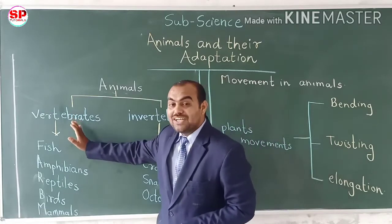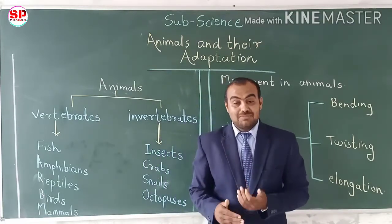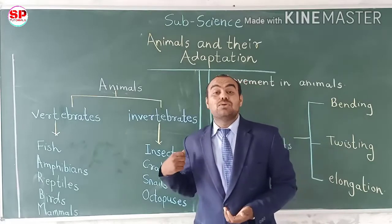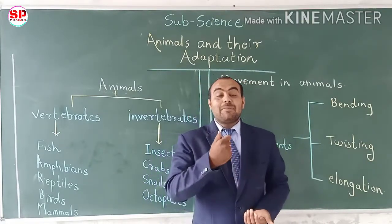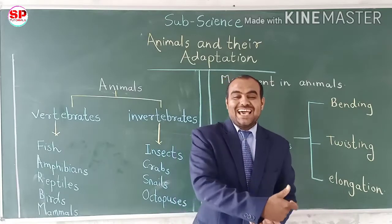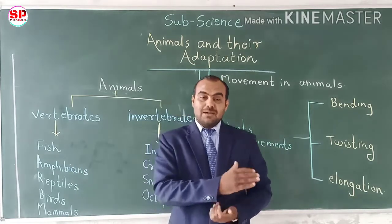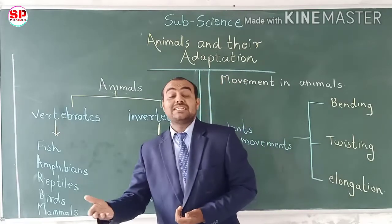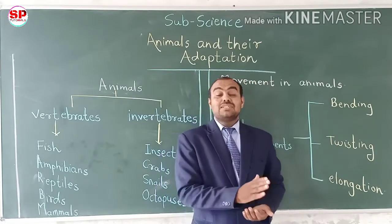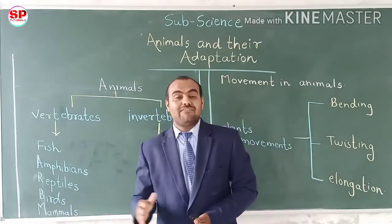The first type is vertebrate animals and the other is invertebrate animals. Animals that have a backbone — those animals are called vertebrate animals. Those animals which do not have a backbone are called invertebrate animals.